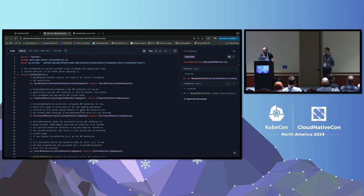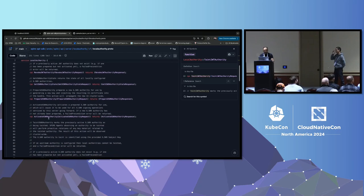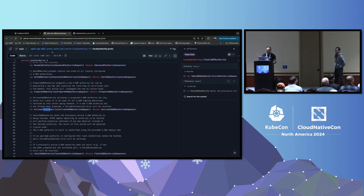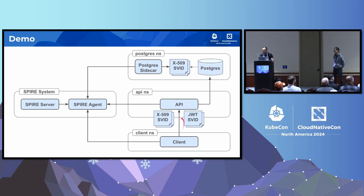We introduced a new API into the SPIRE server: the local authority. That local authority allows us to get, prepare, activate, taint, or revoke. You can see the deployment we are going to use: we have a SPIRE server, a Postgres instance with a sidecar that is a helper using the workload API to fetch X.509 SVIDs and store them on disk so Postgres can use them for mTLS authentication. The API will fetch X.509 SVIDs from the agent to authenticate with Postgres and validate mutual TLS with the client. The client also calls the workload API and uses JWT SVIDs.